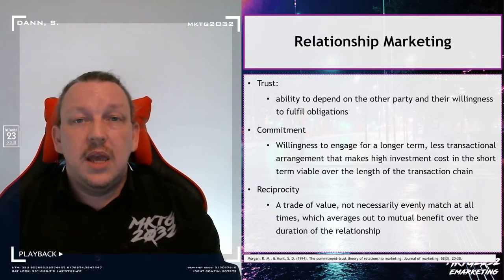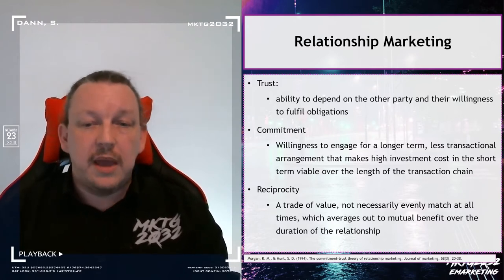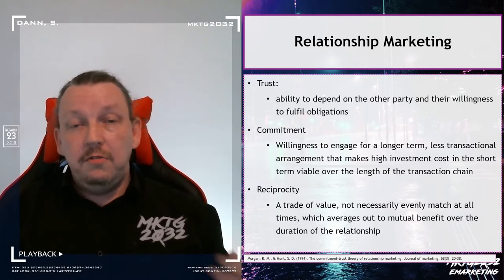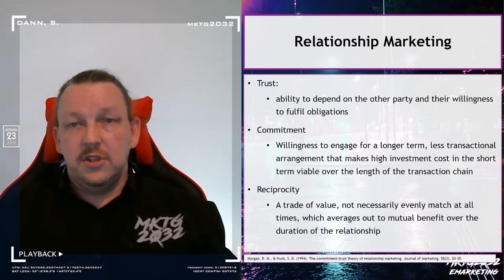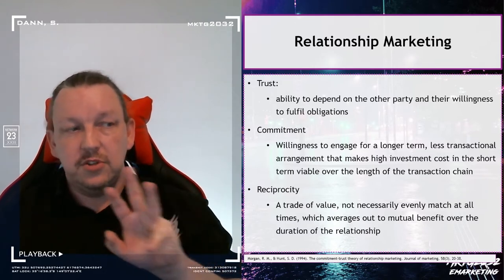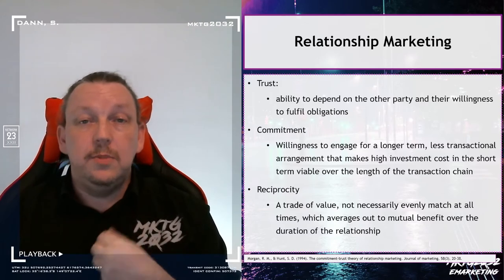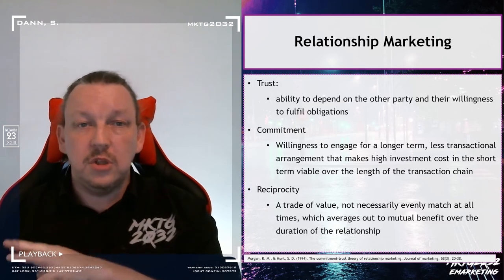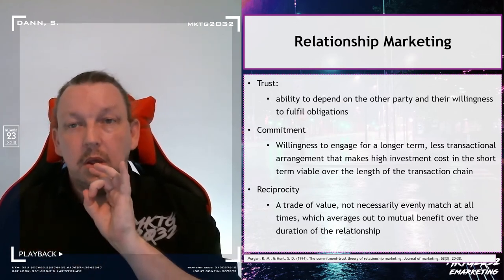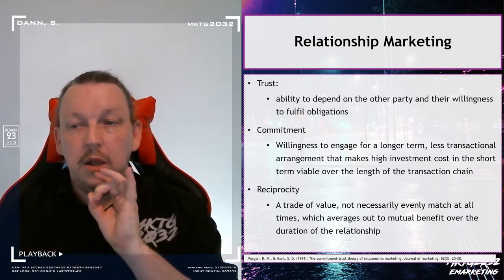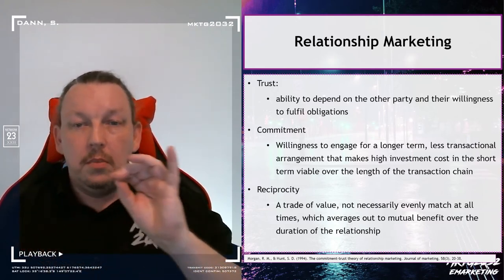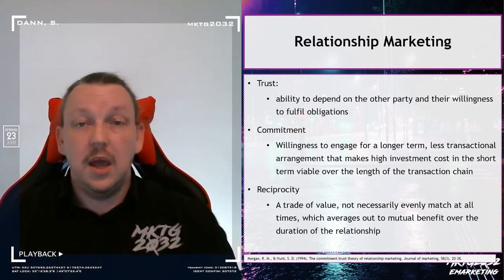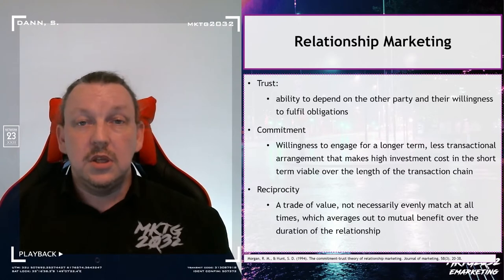The first theory I want to talk about is an old school theory back from the 90s: the concept of relationship marketing. The fundamental principle of relationship marketing is that we move from a one-off, one-shot transaction through to a longer, ongoing, mutual exchange of benefit. To do that, there are three elements required: trust, commitment, and reciprocity.